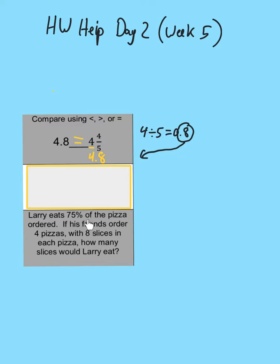It says Larry eats 75% of the pizza ordered. If his friends order 4 pizzas with 8 slices in each pizza, how many slices would Larry eat? So we have to figure out how many slices Larry is going to eat. I know my answer is going to be blank slices.